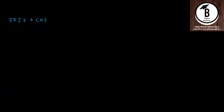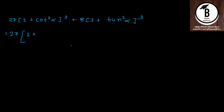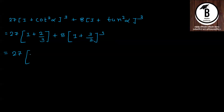अब यहां पे value put करनी है। हमारे पास था: 27·(1 + cot²α)³ + 8·(1 + tan²α)³। cot²α = 2/3 रखने पर 1 + 2/3 = 5/3, और tan²α = 3/2 रखने पर 1 + 3/2 = 5/2। तो expression बनेगा: 27·(5/3)³ + 8·(5/2)³।